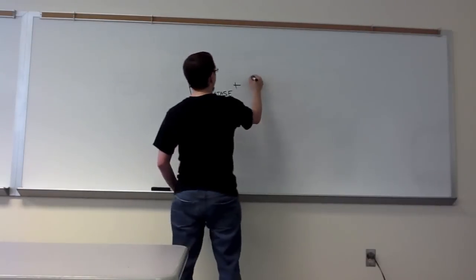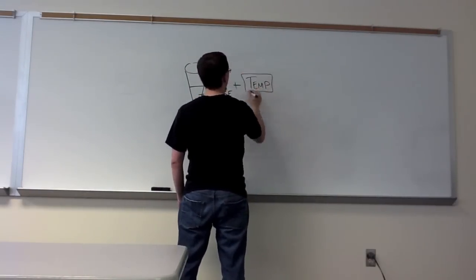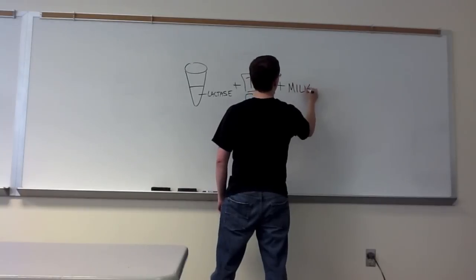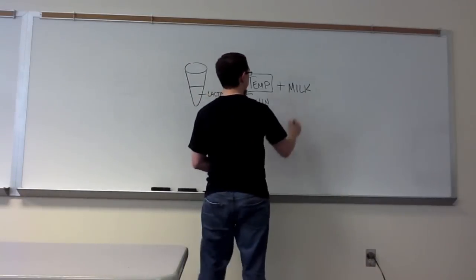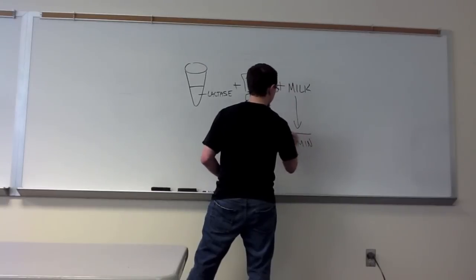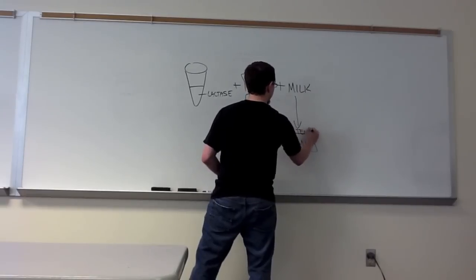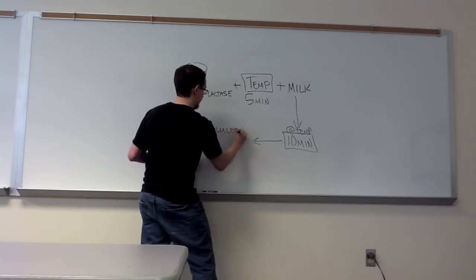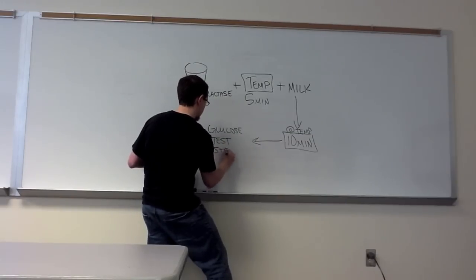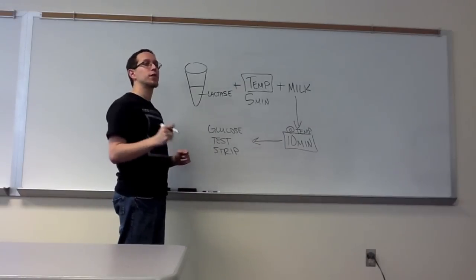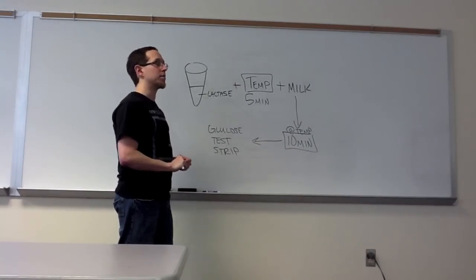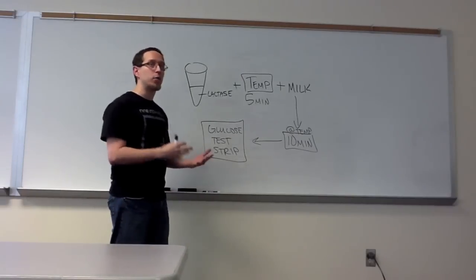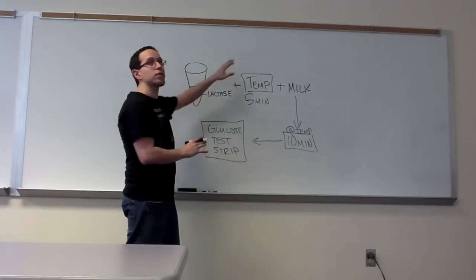You put that tube at some temperature for five minutes. Then after that you added milk. After adding milk, you let that tube sit for ten minutes at that temperature. Then you took your glucose test strip, dipped it into the Eppendorf tube for a second, pulled it out, let it sit on your bench top, and let it develop for either thirty seconds or a minute depending on which lab you were in. Once the glucose test strip developed, it told you how much glucose existed inside the tube, which directly correlates to lactase activity.